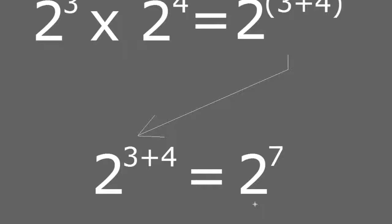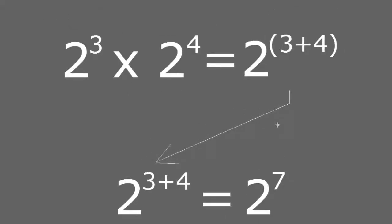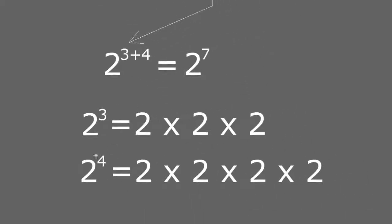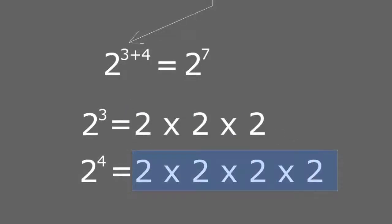This is like a shortcut so that I don't have to do all the long multiplication. If we didn't have this property, let me show you the long way to get from 2 to the power of 3 times 2 to the power of 4 to 2 to the power of 7. What I would have to do is expand that. First, 2 to the power of 3 is 2 times 2 times 2, multiplied by itself 3 times. And 2 to the power of 4 is 2 multiplied by itself 4 times.